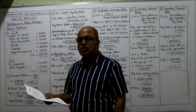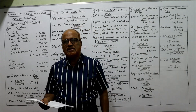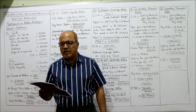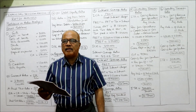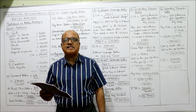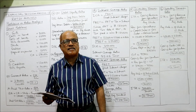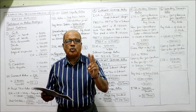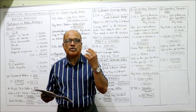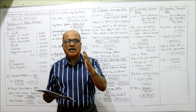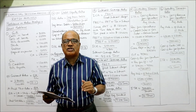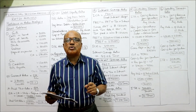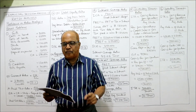Now I am starting with the short problems. See the first short problem: from the following particulars, calculate current ratio and acid test ratio. This is the first short problem — it is asking for two liquidity ratios: current ratio and acid test ratio. Acid test ratio is also called quick ratio.